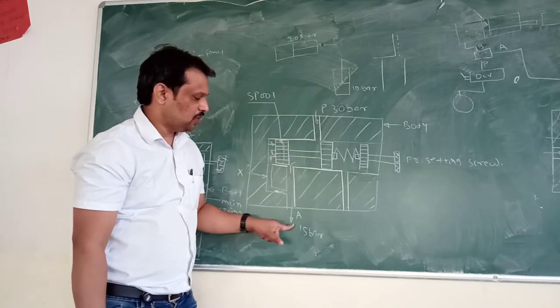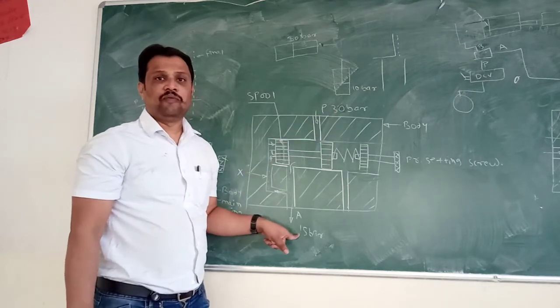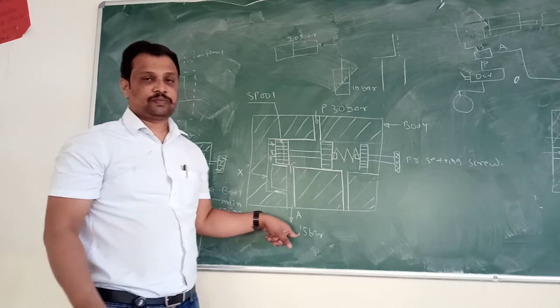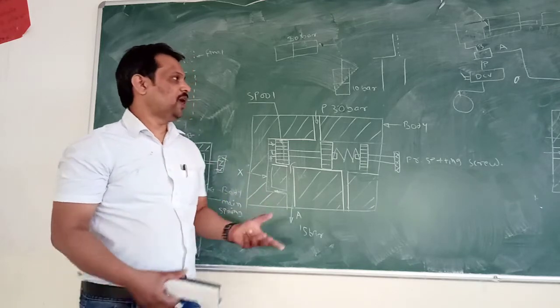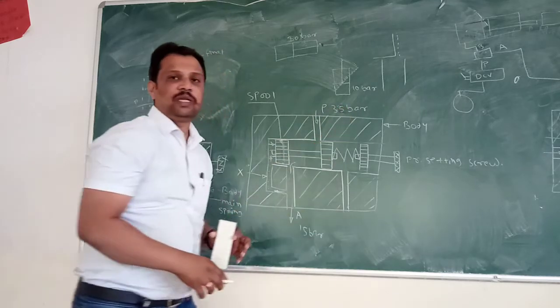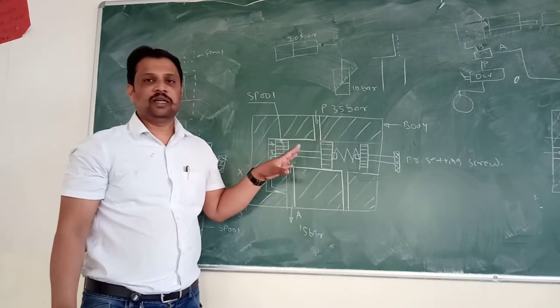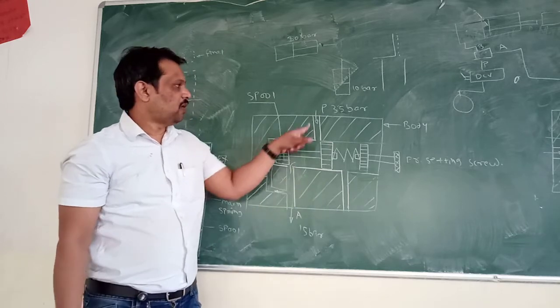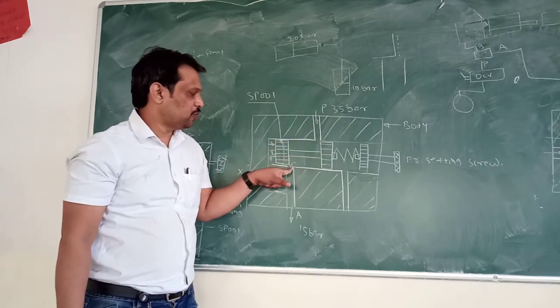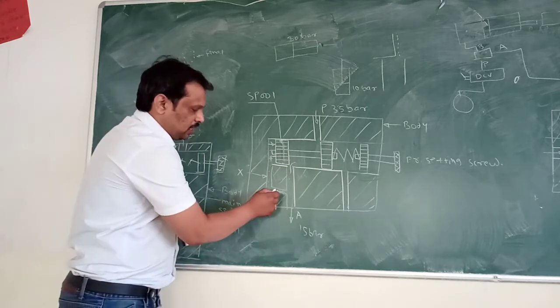So continuously oil will flow from P port through this cavity to A port. Means here pressure is 30 bar and here you will get 15 bar pressure. But when this pressure, due to some problem, increases to 25 bar pressure or increases to 35 bar pressure, when this condition arises...